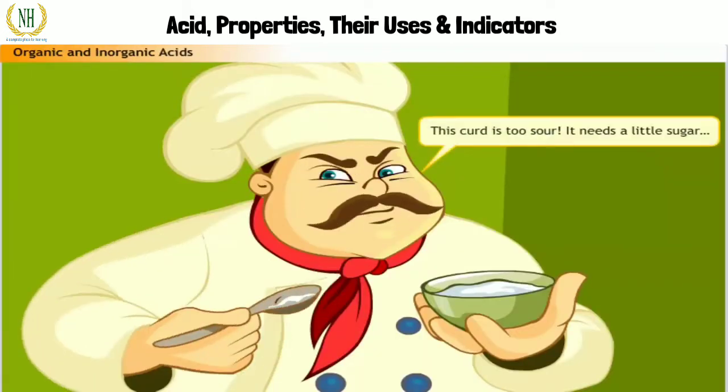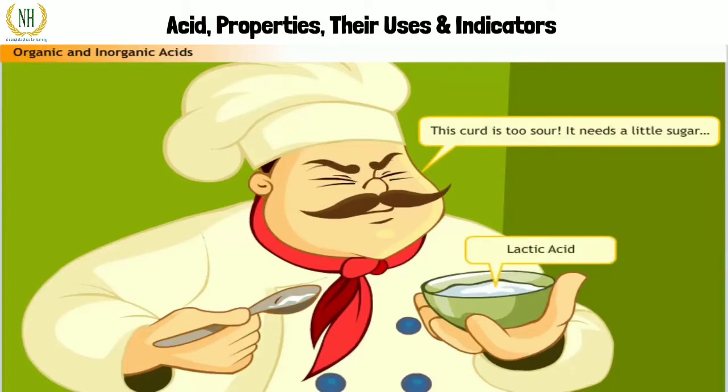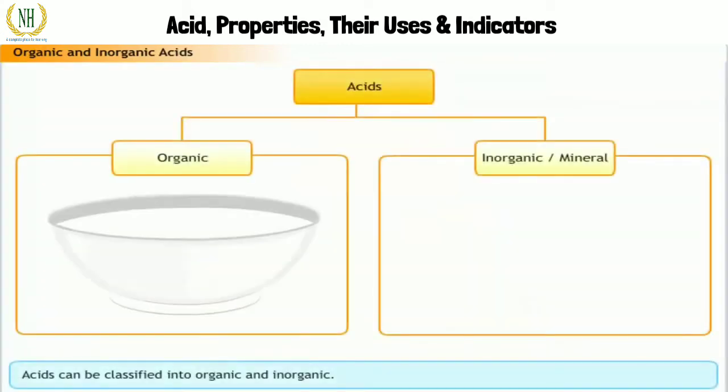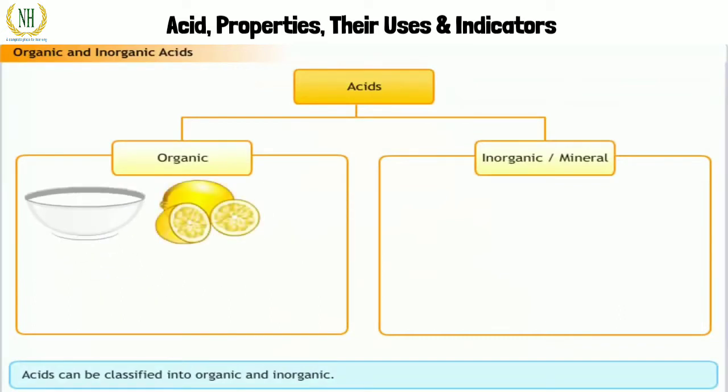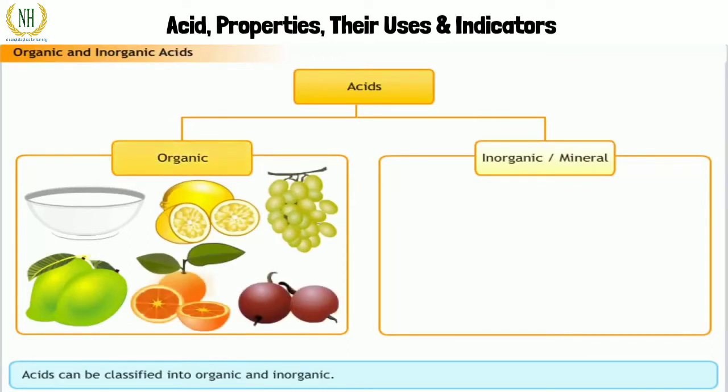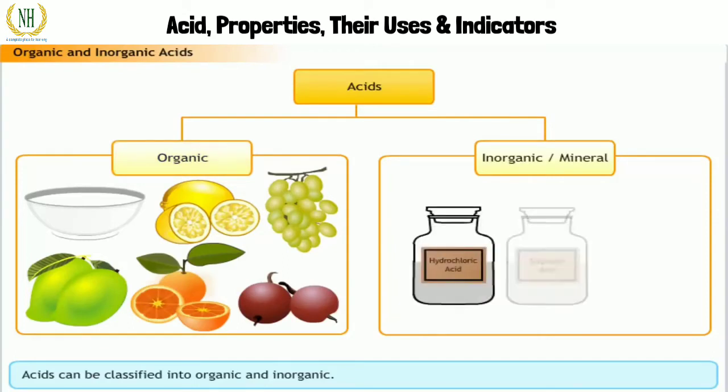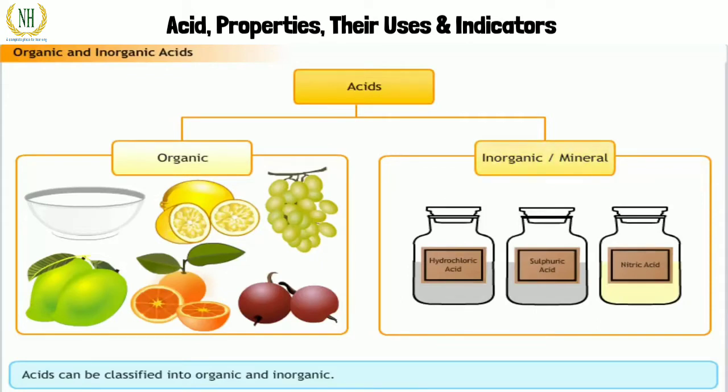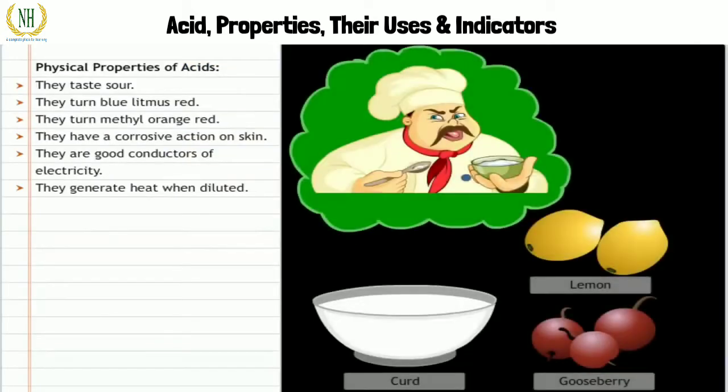This curd is too sour, it needs a little sugar. Curd contains lactic acid which gives it a sour taste. Acids obtained from food like curd, lemons, grapes, raw mango, citrus fruits, and gooseberry are called organic acids. Hydrochloric acid, sulfuric acid, and nitric acid are called inorganic or mineral acids.